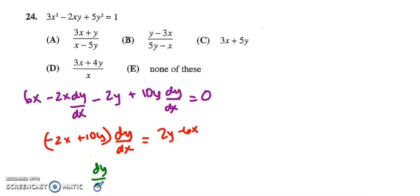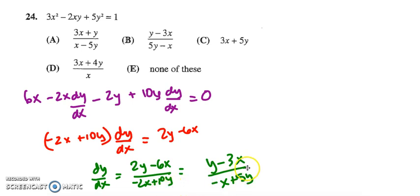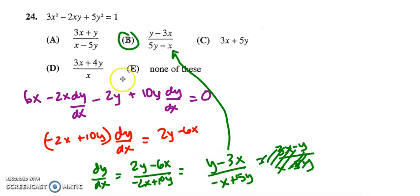Finally, I will divide to get my dy/dx, but these are all divisible by 2 and can be simplified to (y minus 3x) over (negative x plus 5y). I don't match one of my answers, but this answer matches here, I just had to write my denominator in the reverse order. The answer is B.